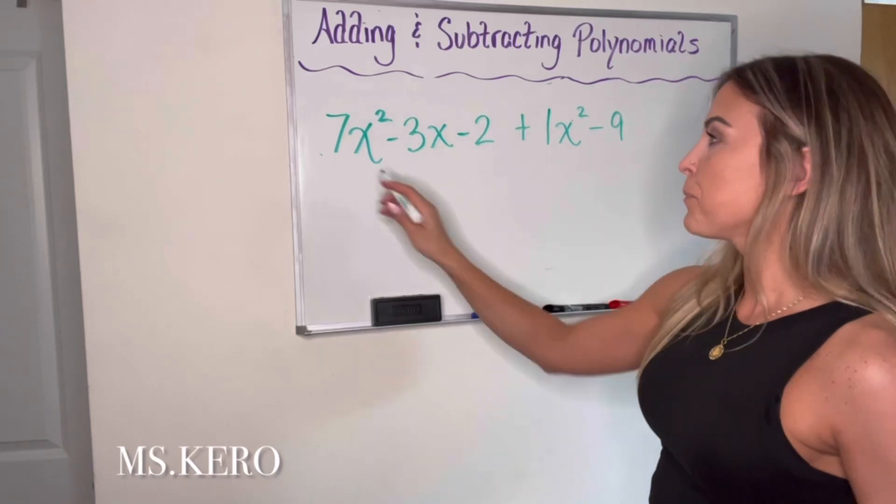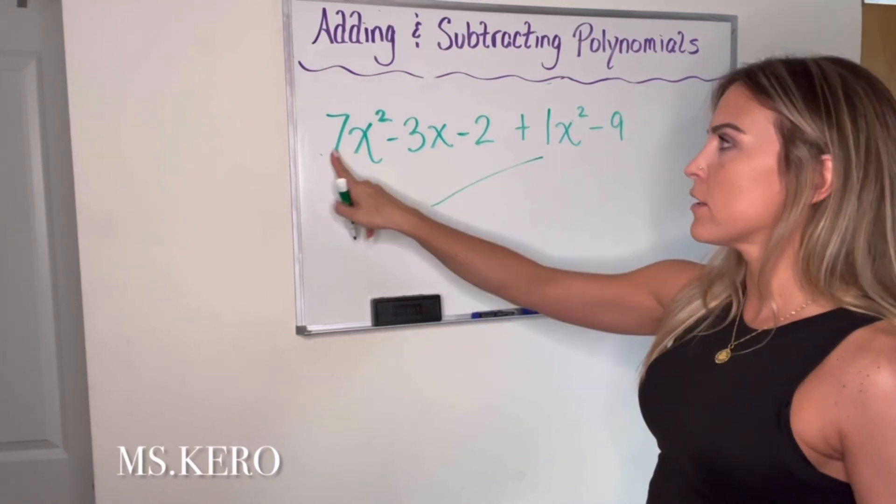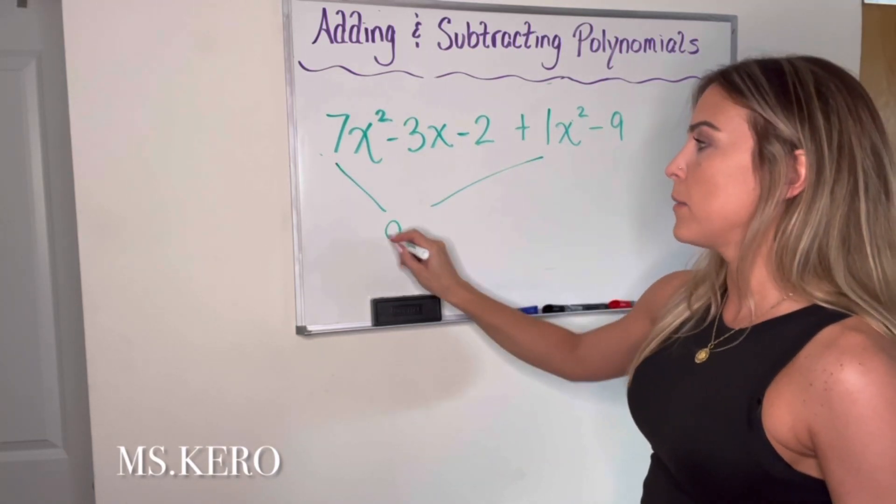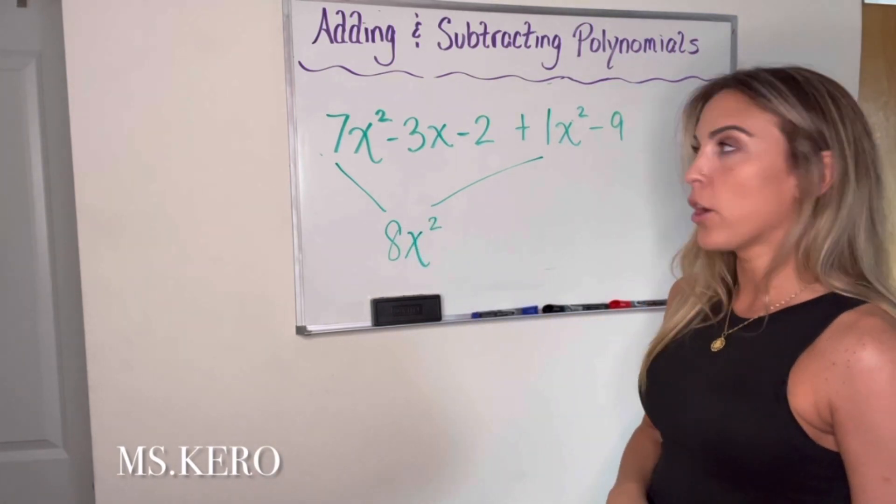So now to combine, we're just going to combine the coefficients. So it's 7 plus 1. So that gives me 8. And I'm keeping my x squared the same.